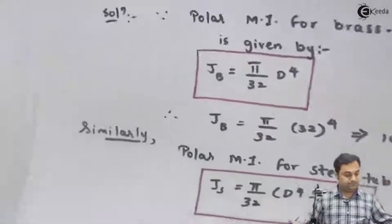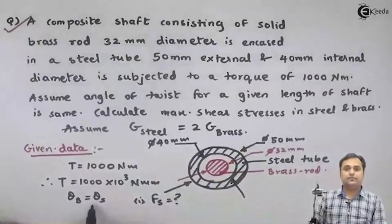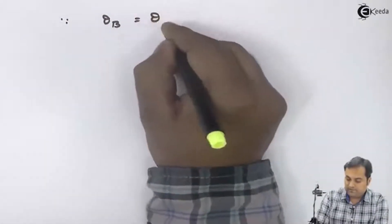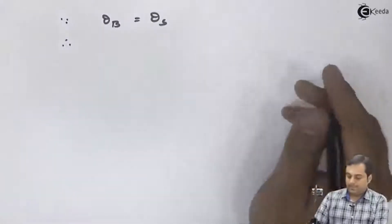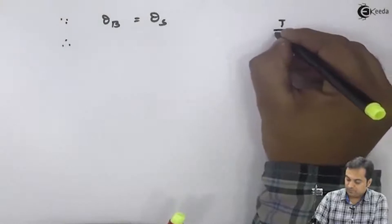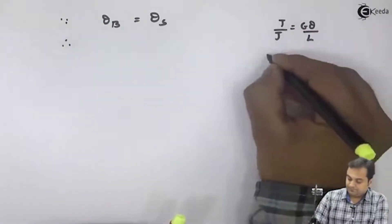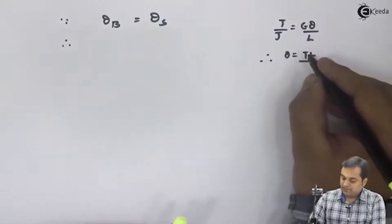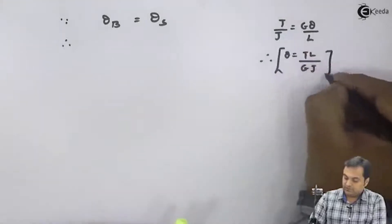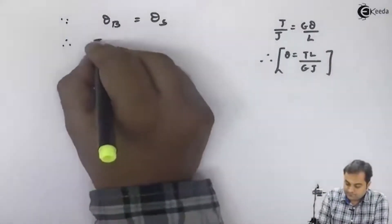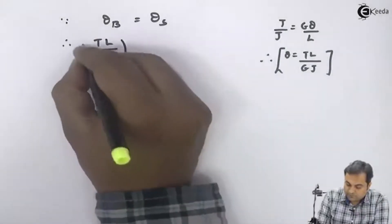Now I will use the condition given in the problem — angle of twist is same for both brass and steel. Since we know that T/J = Gθ/L, therefore θ = TL/GJ. I will use this relation for both brass and steel. Writing the angle of twist for brass as T_b × L / (G_b × J_b).